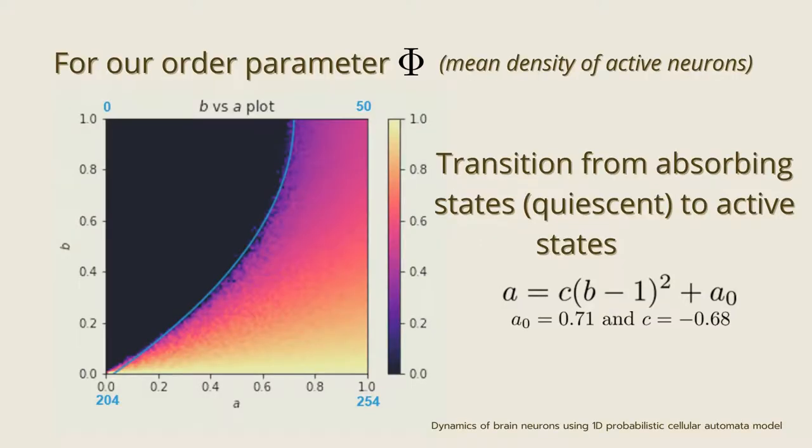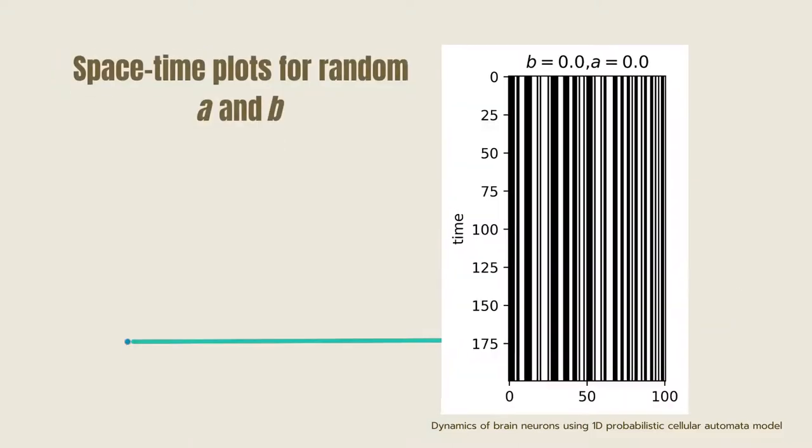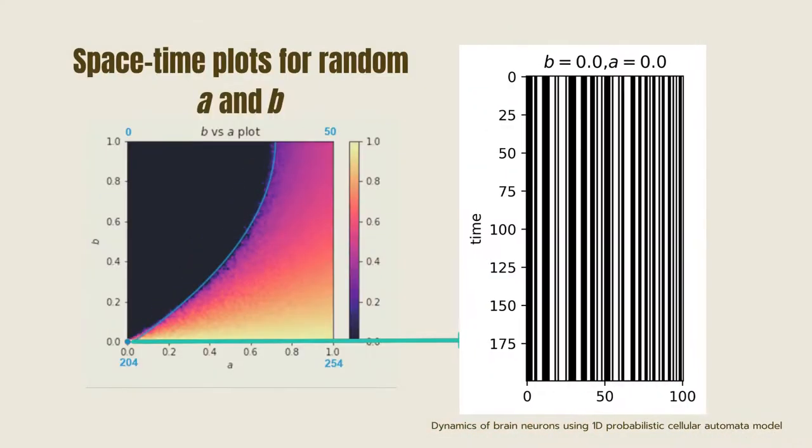Upon running our model, for the parameter phi, we observe a transition from quiescent states to active states. Depending on the values of A and B, we can notice the critical points in a transition diagram.